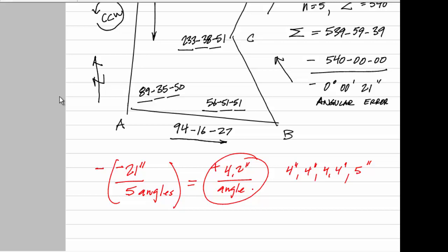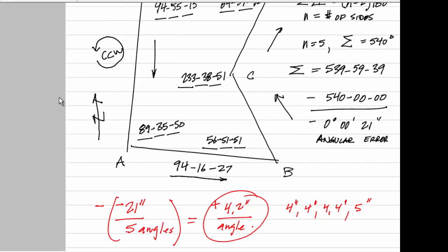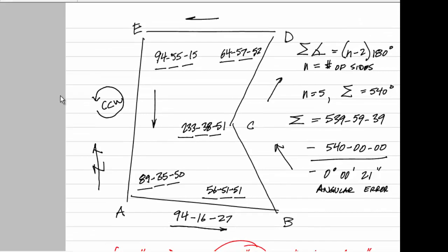These are the corrections I will apply to each angle. So I think I'm going to start here at angle B, and I'm going to apply four seconds to each angle. Remember, I'm overall this many seconds too few, so I'm going to have to add seconds to each angle to get the sum back up to 540. So I'm going to add four seconds to this one, four seconds to this one, four seconds here, four seconds here, and the last one I will add five seconds to. These are my corrected interior angles.